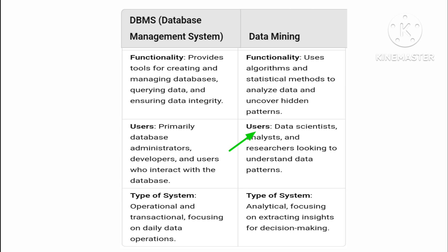Regarding types of systems: DBMS is an operational and transactional system focusing on daily data operations, while data mining is an analytical system focusing on extracting insights for decision making. In short, DBMS is the organized filing system for storing and managing data, and data mining is the process of searching through the data to find useful insights or patterns.